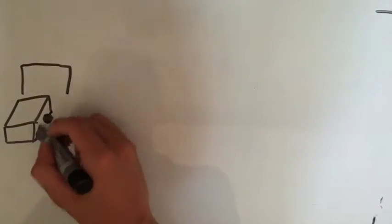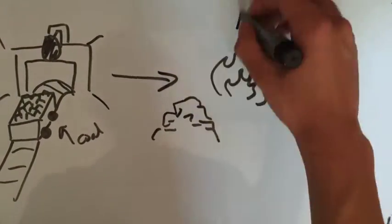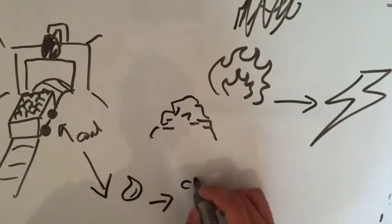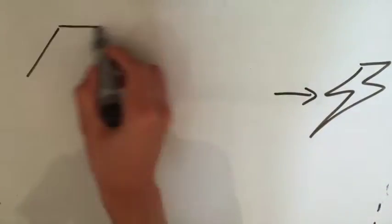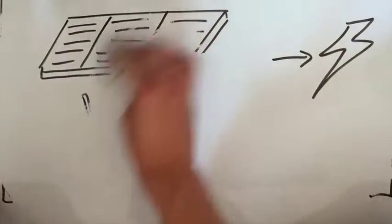Instead of burning coal right after digging it up, coal can be processed so it doesn't give off pollutants after being burnt. People can also seek new methods of producing energy, for example, solar energy or wind energy.